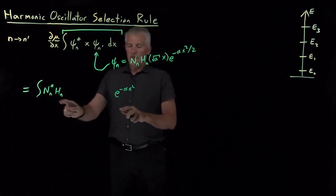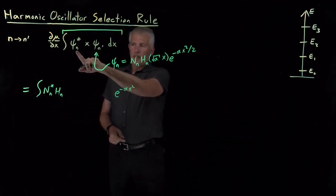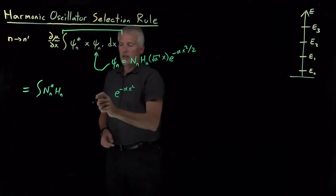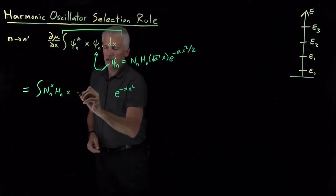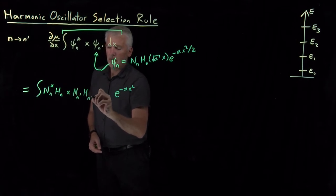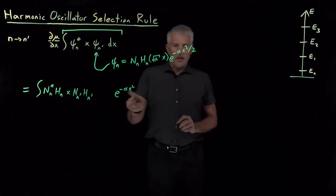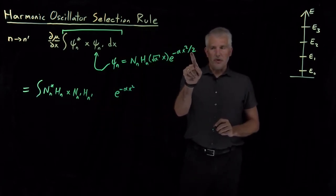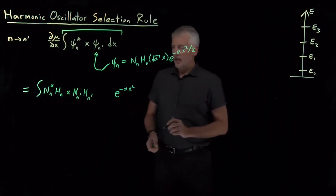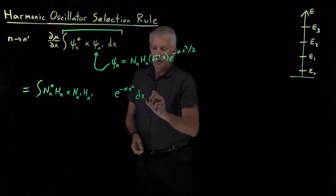So these pieces are from the first wave function. I've also got an x, and then I've got constants with n primes, Hermite polynomial with n prime, and the rest of the Gaussian, the other factor of e to the minus alpha x squared over 2 that combined to give us this term. And that's all integrated over dx.